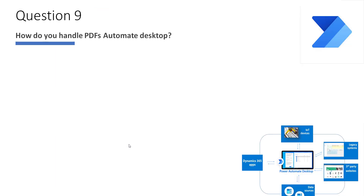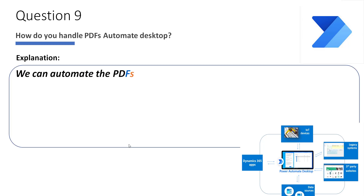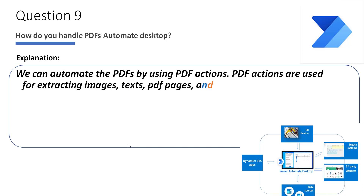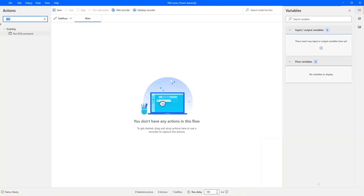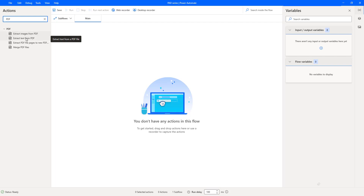Next question: How do you handle PDFs in Power Automate Desktop? We can automate PDFs using PDF actions, which are used to extract images, text, PDF pages, and merge PDFs. Under Actions, searching for PDF shows: Extract Images from PDF, Extract Text from PDF, Extract PDF Pages to New PDF File, and Merge PDF Files.